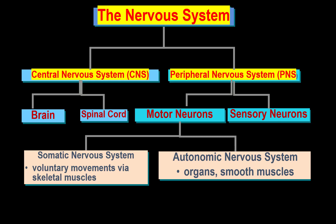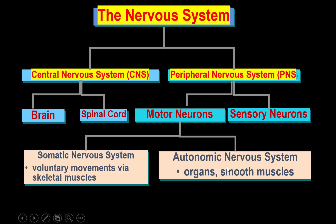The other division of the Motor Neurons is the Autonomic Nervous System, which controls the involuntary functions of organs like smooth muscle, heart, lungs, kidneys, etc.